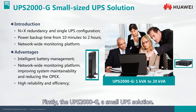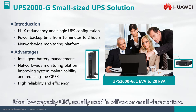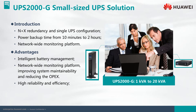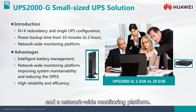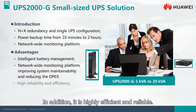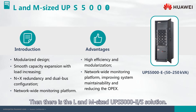First, the UPS 2000-G is a small UPS solution with low capacity, usually used in offices or small data centers. It is powerful in spite of its size and is supported by intelligent battery management and a network-wide monitoring platform. In addition, it is highly efficient and reliable.